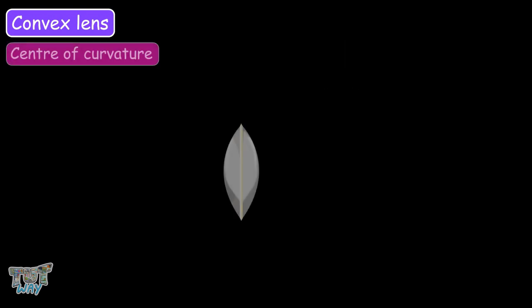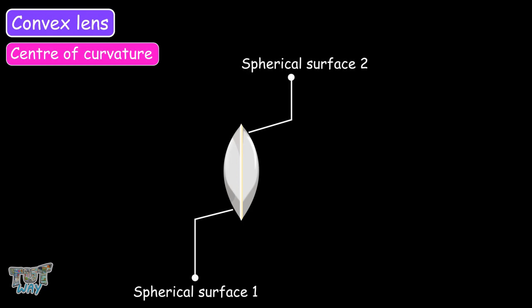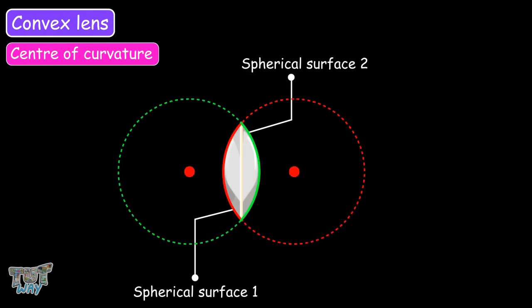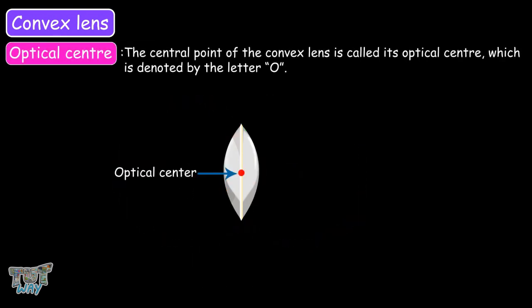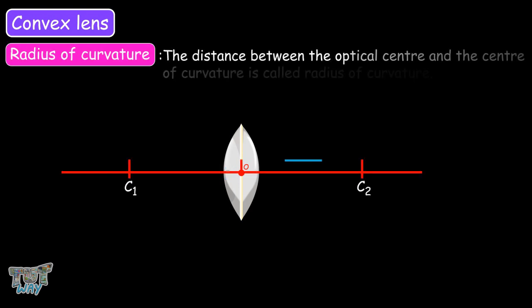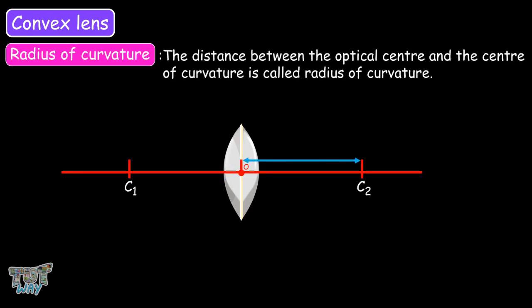The first term was center of curvature. Convex lenses have two spherical surfaces, and the centers of the spheres of which these surfaces are part of are called centers of curvature of the lens, denoted as C1 and C2. The central point of the convex lens is called its optical center, denoted by the letter O. The distance between the optical center and the center of curvature is called the radius of curvature, denoted by the letter R.